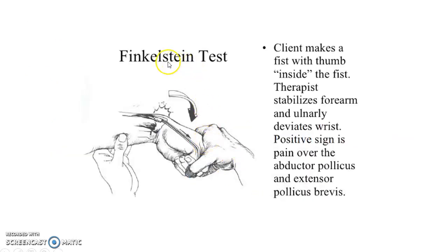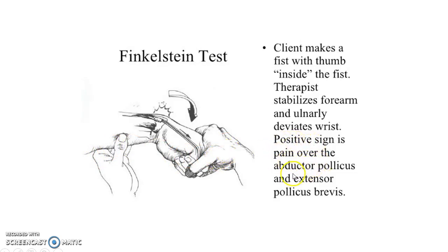This picture shows Finkelstein's test. The patient is asked to make a fist with the thumb inside the fist. The examiner stabilizes the forearm and ulnar deviates the wrist. A positive sign is pain over the abductor pollicis longus and extensor pollicis brevis tendons.